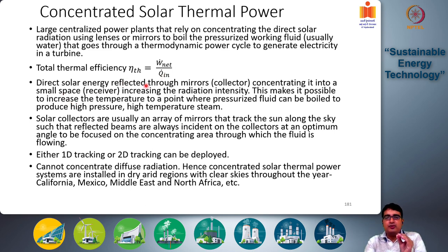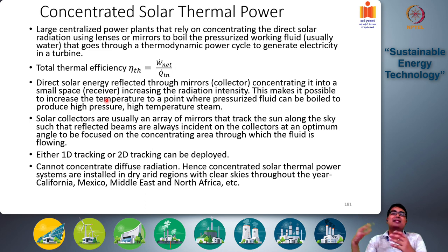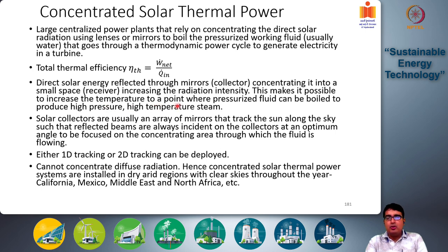Direct solar energy is reflected through mirrors — the collectors — concentrating it into a small space called the receiver, increasing the radiation intensity in watts per meter squared. This makes it possible to increase the temperature to a point where pressurized fluid can be boiled to produce high-pressure, high-temperature steam.